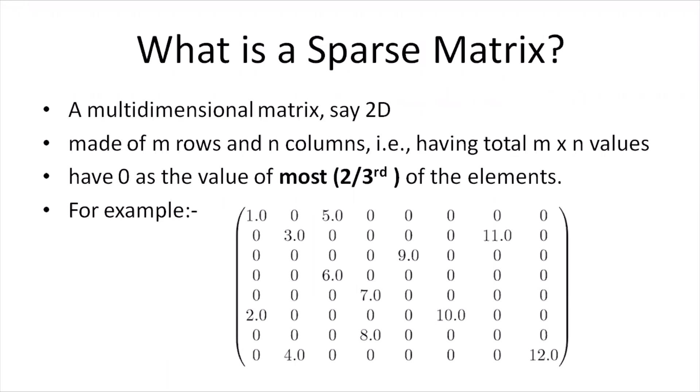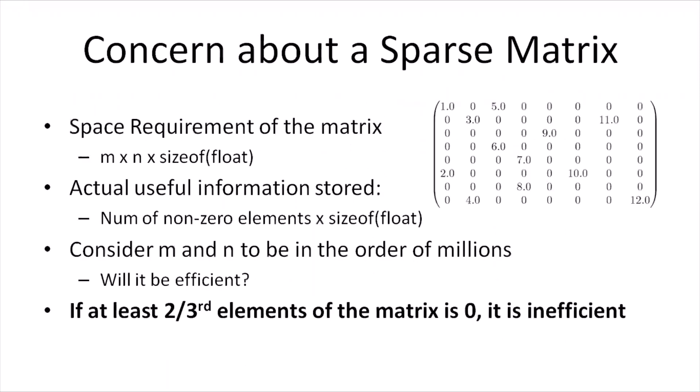The common way of representing a matrix in a computer's memory is by using a two-dimensional array. If we have a sparse matrix comprising of m rows and n columns, the space required by the matrix, if represented by a general two-dimensional array, will be m × n × size of float. If the number of non-zero elements is represented as NNZ, the memory for non-zero elements will be NNZ × size of float, while the rest stores only zeros. If m and n are in the order of millions while NNZ is negligible, will it be efficient to use a two-dimensional array?